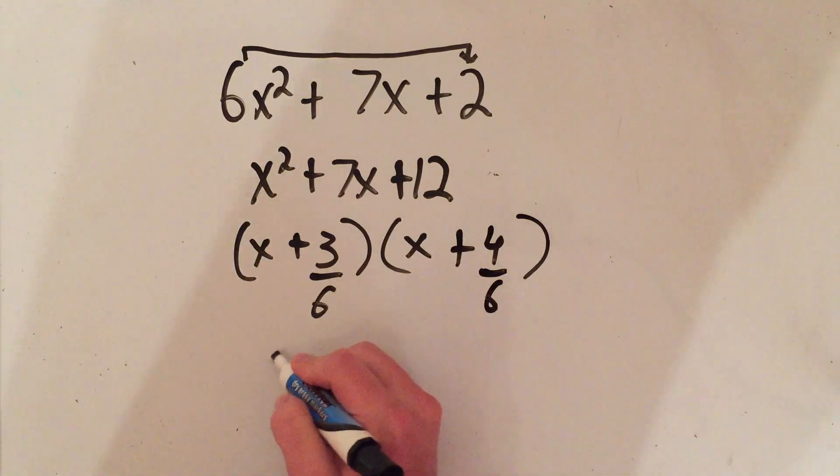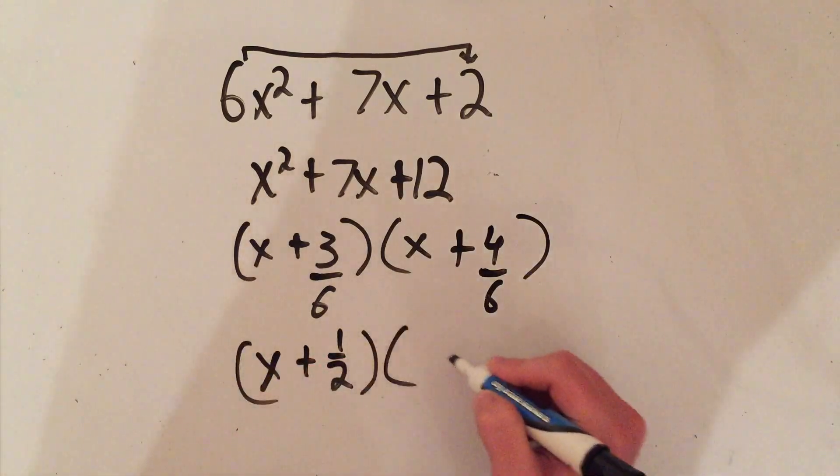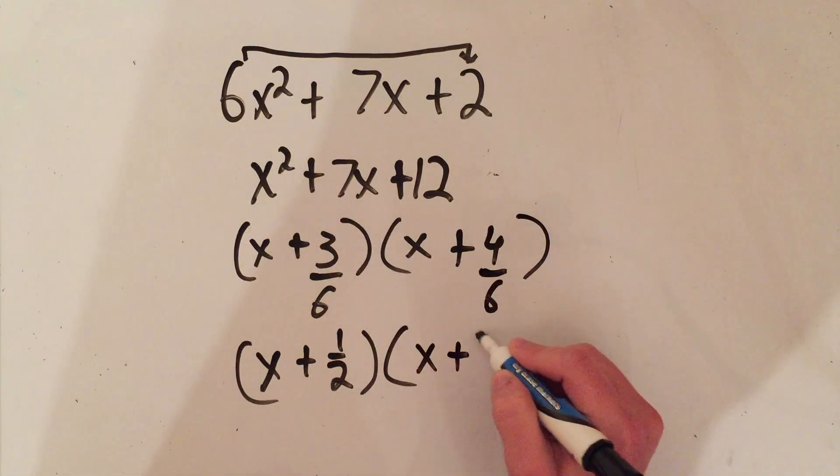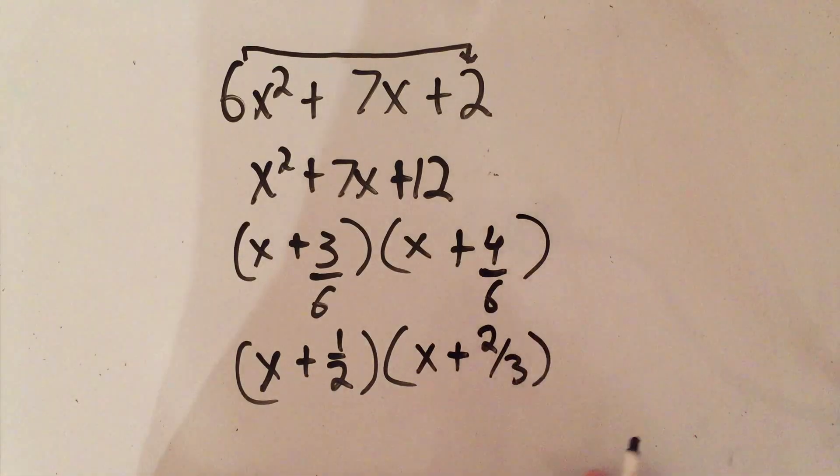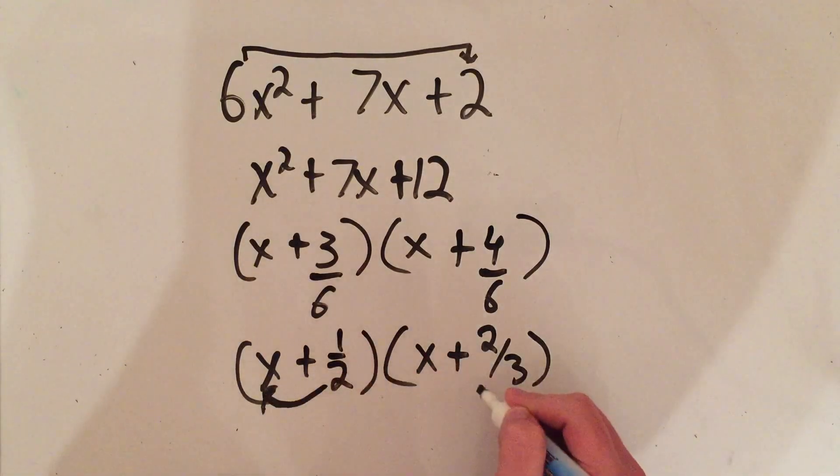I'm gonna reduce those, so 3 over 6, that's 1/2, and 4 over 6, that's going to be 2/3. And the last thing that you need to do is take whatever's on the bottom of the fraction and multiply by the x out front. So this 2 will come in front of the x.